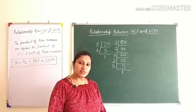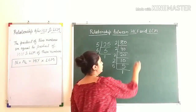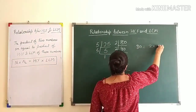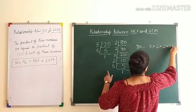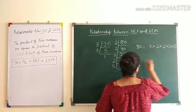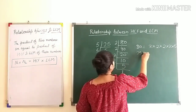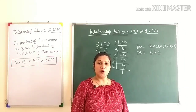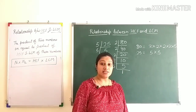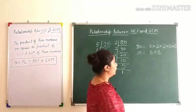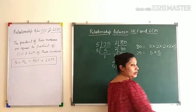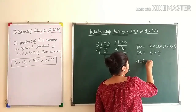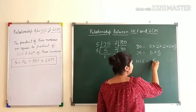First we will write the factors of these numbers. For 80: 2 × 2 × 2 × 2 × 5. For 25: 5 × 5. Now, what is HCF? HCF is the Highest Common Factor. Here you can see the common factor is 5 only, and it is the highest common factor. So, the HCF of 25 and 80 is 5.